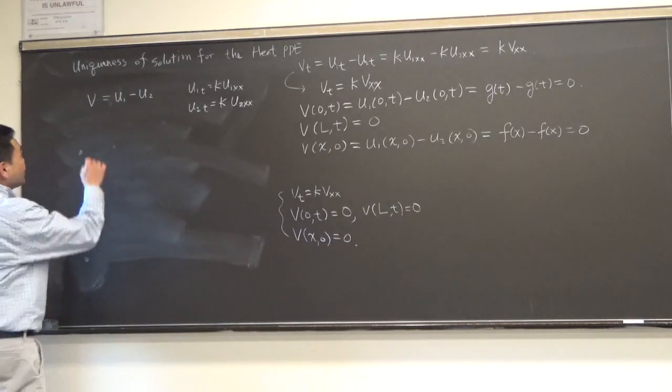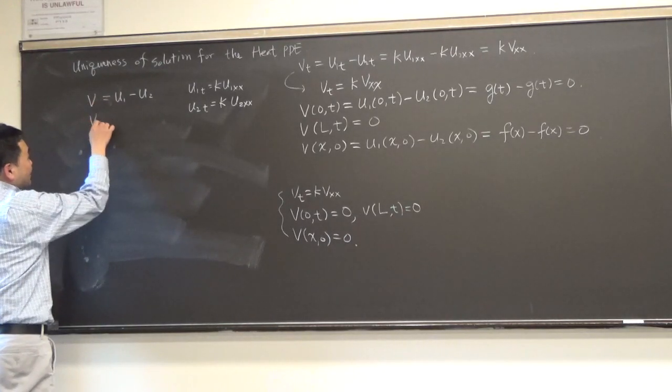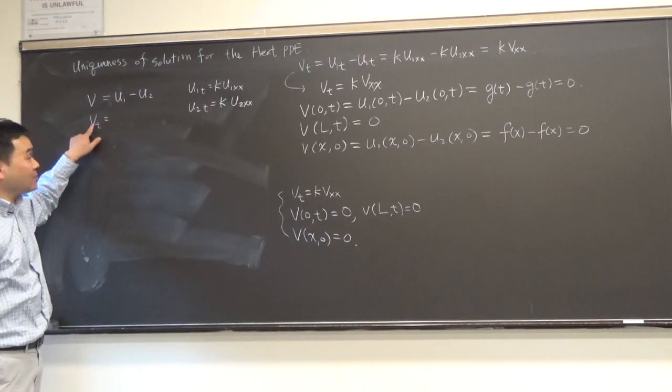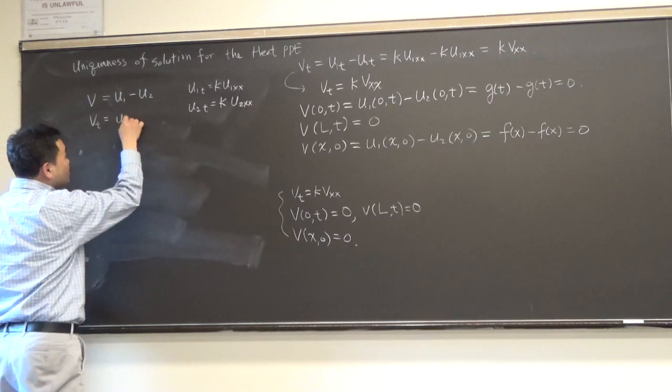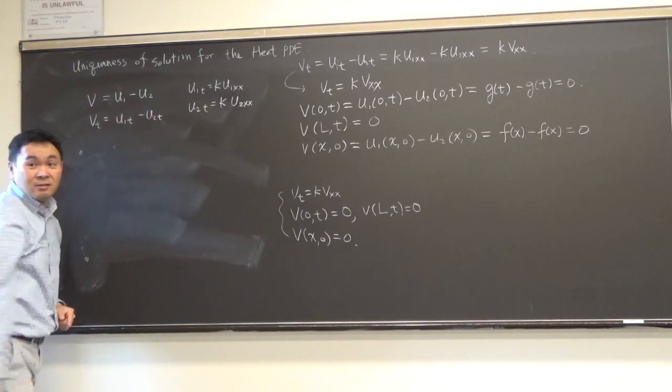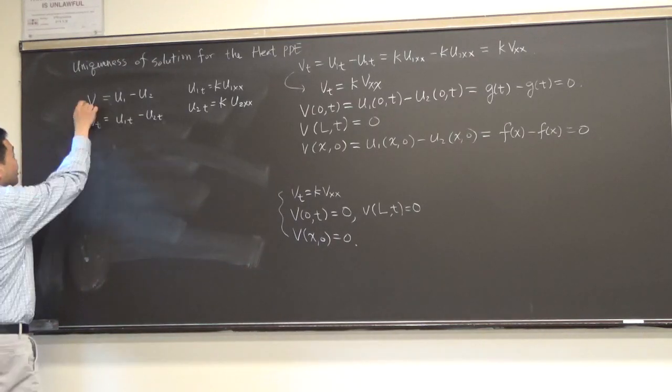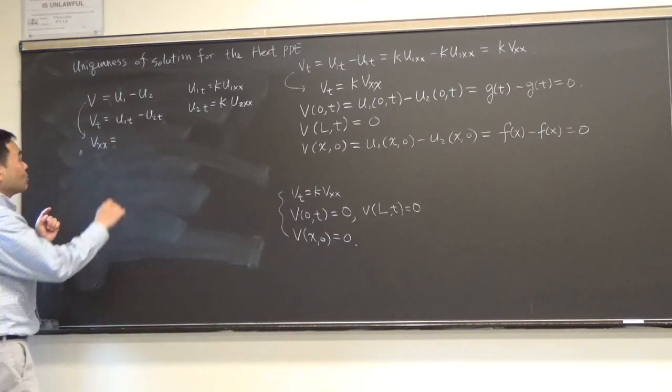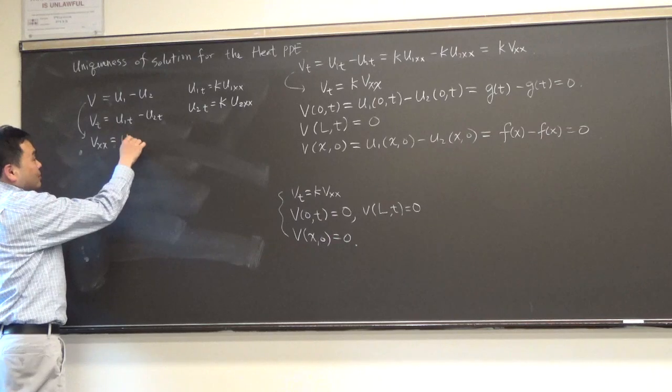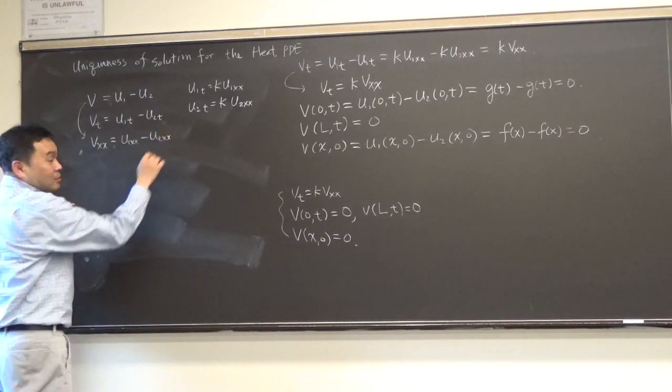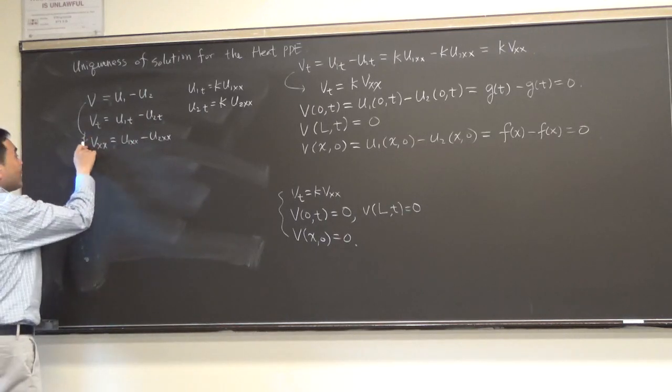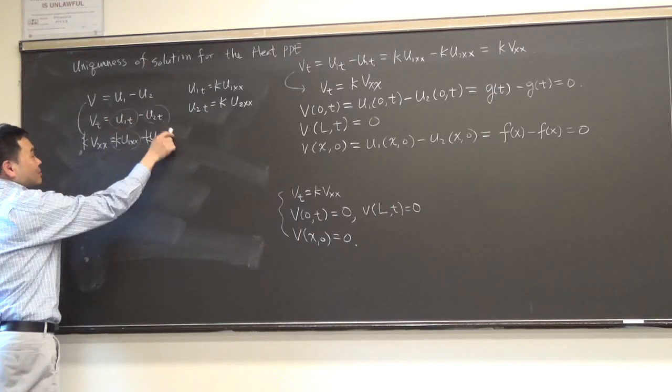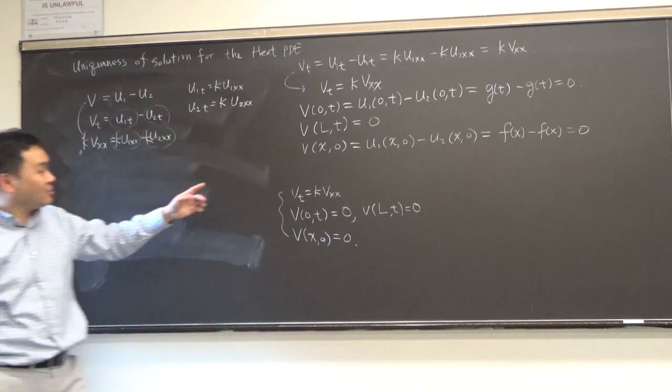But we know that, and then, now let's think about this v. If you differentiate v by t, differentiation is linear, right? Differentiating v by t is same as differentiating u1 by t and u2 by t. But now we can also take this and differentiate both sides twice by x. Second derivative is also linear, right? So you have u1_xx minus u2_xx. Now you multiply by k, but then what is this? This is same as this, this is same as this, so this must be same as that. That's why this is true.